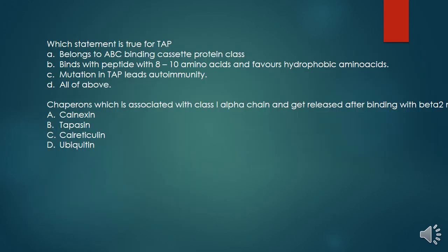Now the question part — the answers are covered in this lecture. Question one: which statement is true for TAP? Options: it belongs to the ABC binding cassette protein class; it binds peptides of 8 to 10 amino acids and favors hydrophobic amino acids; mutation in TAP leads to autoimmunity; or all of the above. Question two: which chaperone is associated with the class 1 alpha chain and gets released after binding with beta-2 microglobulin — calnexin, tapasin, calreticulin, or ubiquitin? Please answer in the comment box. If you like my explanation, please subscribe to my channel and comment on any topic you want to understand. Thank you.